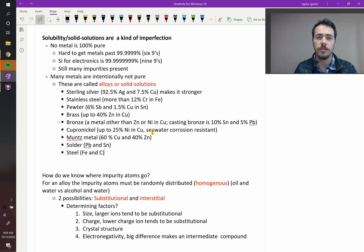How about pewter? That's 6% antimony and 1.5% copper in tin. Brass: you can add all the way up to like 40% of zinc in brass to get lots of different types of brasses out there.